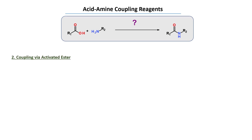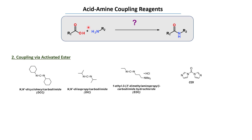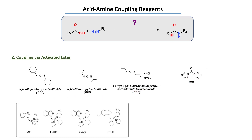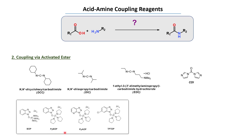We can also couple this acid with the amine using an activated ester approach, converting the acid using DCC, DIC, EDC, and CDI reagents to get the amide. We can also use BOP, PyBOP, and PyAOP reagents, as well as TPT and DP reagents to get the amide.